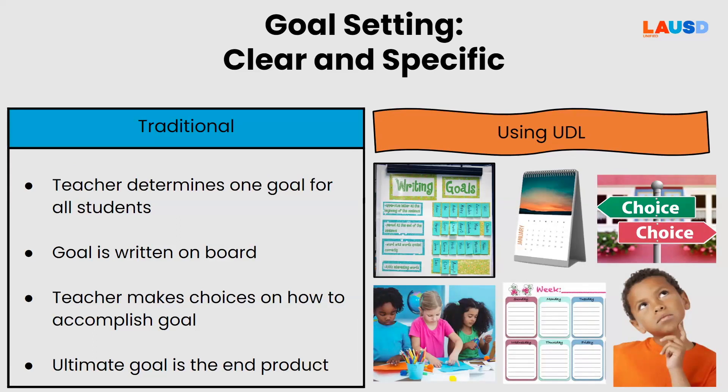In a traditional classroom, a whole class goal is usually determined by the teacher and written on the board. The teacher makes choices on how students accomplish this class goal — there is one goal and one way to get there. However, in a classroom that implements UDL, goal setting looks a little different. There are classroom goals, but the teacher supports students' learning by including their individualized needs and goals. They can be written on the board, copied into student notebooks, or placed into checklists that guide students while working. Using planning templates for breaking long-term goals into short-term objectives also provides structure and pathways to achieving goals. UDL's ultimate goal is for students to understand how they learn best and what they need to succeed.